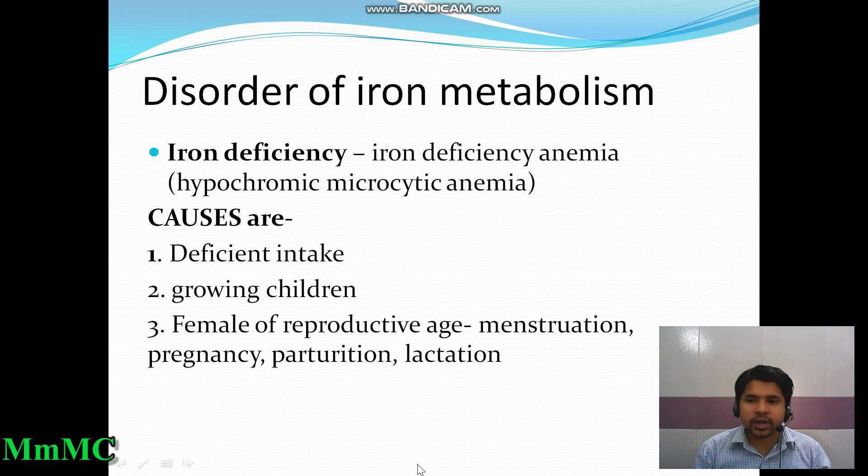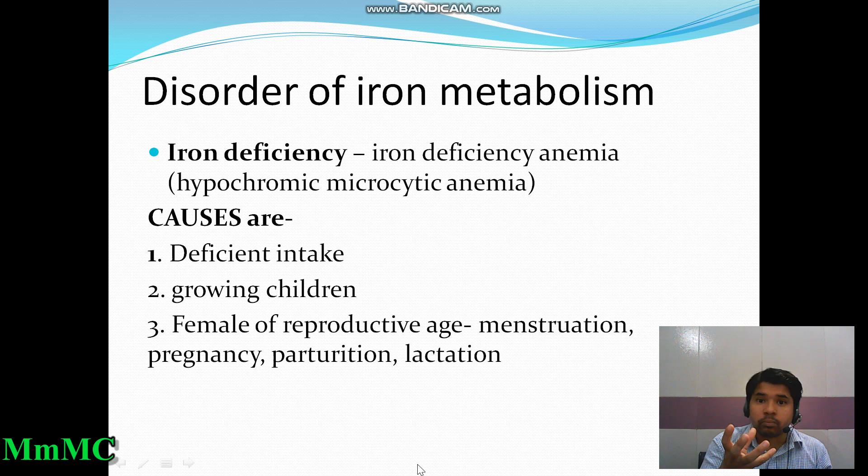In this peripheral blood smear, we see the morphology of the red blood cell — it has become hypochromic and microcytic. Hypochromic is due to deficiency of iron, which ultimately causes decreased synthesis of hemoglobin. 'Chromo' means color, so hypochromic means decreased color.